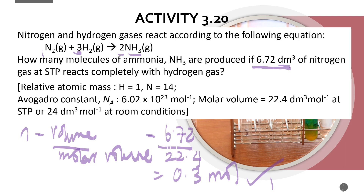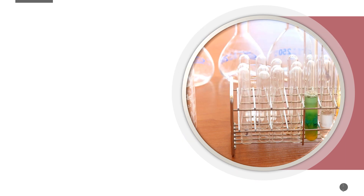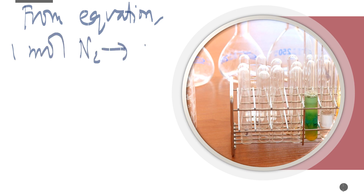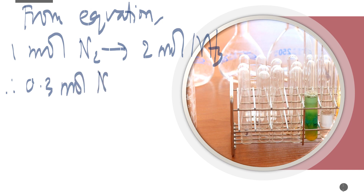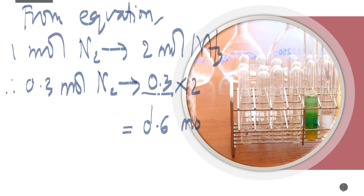From the equation, one mole of nitrogen gas produces two moles of ammonia. Therefore, 0.3 moles of nitrogen gas produces: (0.3 ÷ 1) × 2 = 0.6 moles of ammonia (NH3). One mark for this step.